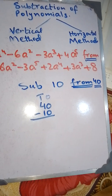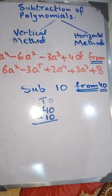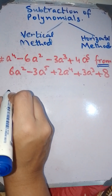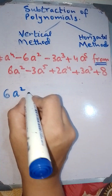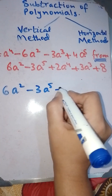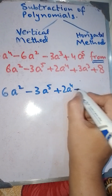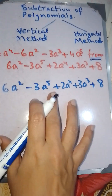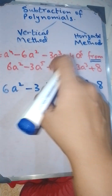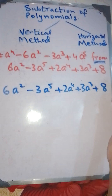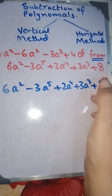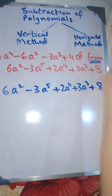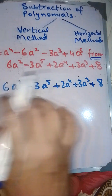Taking the last term first, we are going to write it: 6a² minus 3a⁵ plus 2a⁴ plus 3a³ plus 8. This is the last expression and I am going to write it first because it is written after the word 'from'. This is the key point you have to keep in mind while doing the subtraction of polynomials.